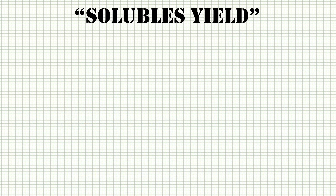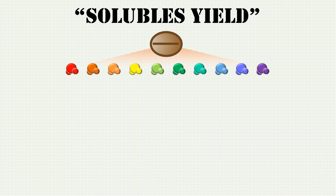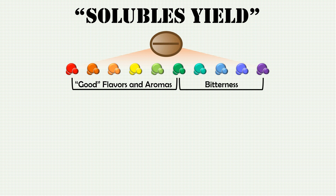To understand solubles yield, let's take this roasted coffee bean and imagine it's composed of this spectrum of solubles you see here. The good flavors and aromas are represented by the warm colors — the reds, oranges, yellows — and the blues and purples, the cooler colors, represent materials more associated with bitterness. The dark green molecule is right on the border of good flavors and aromas and bitterness, and this molecule represents both.